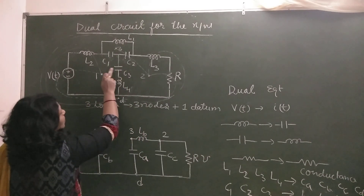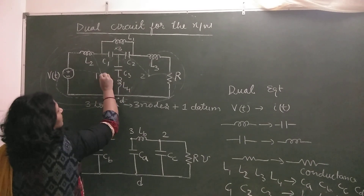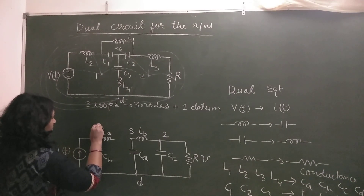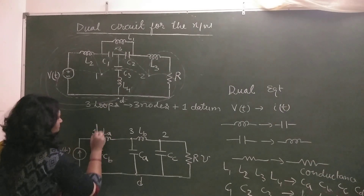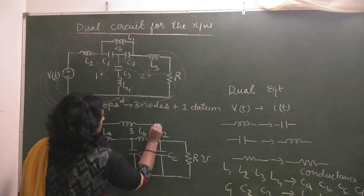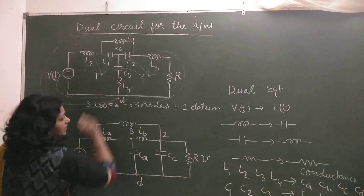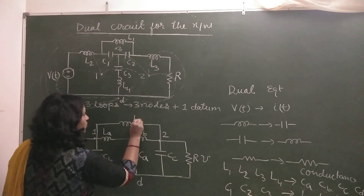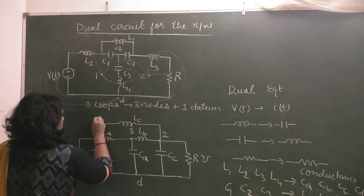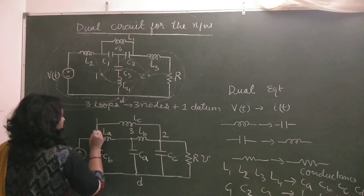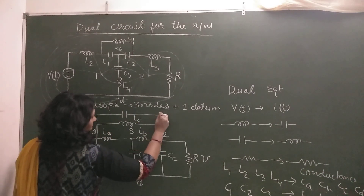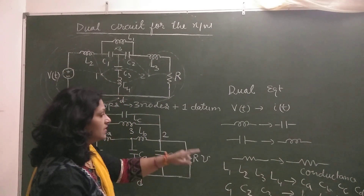These two elements are left, and they are falling between nodes 1 and 2. C3 is between 1 and 2, so I have to draw an inductance between 1 and 2 — C3 will now be changed to inductance LC. And L4 is again falling between 1 and 2, so I draw a capacitance between 1 and 2, represented by CD.